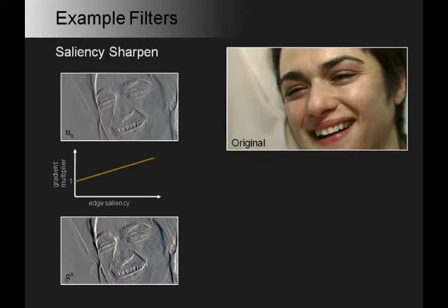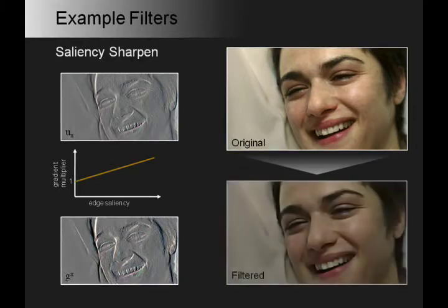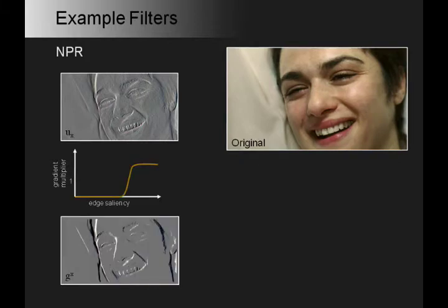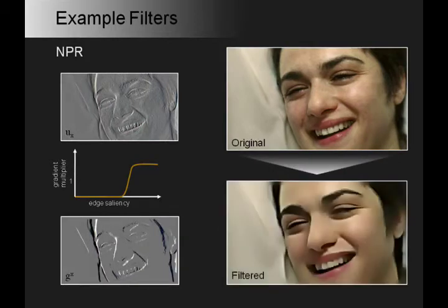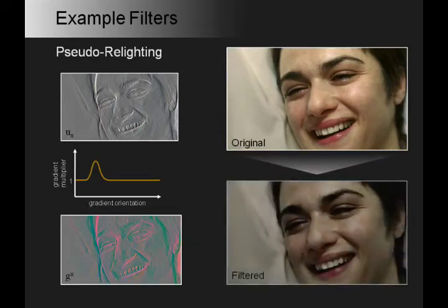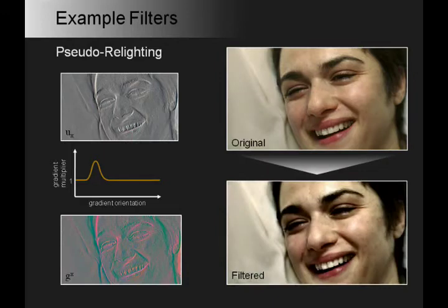An improved sharpening filter may be applied using edge saliency. An NPR effect can be achieved by removing gradients with less saliency and increasing those with more. Finally, gradients at specific orientations may be increased to create a pseudo-relighting effect.